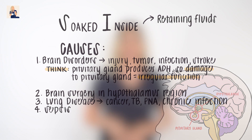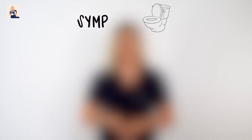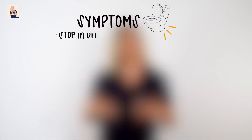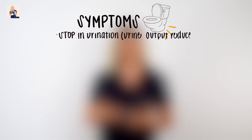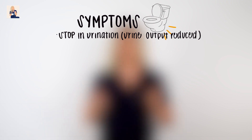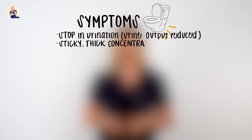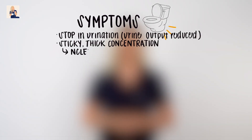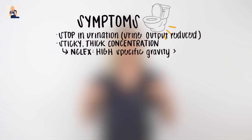Symptoms of SIADH all revolve around urination. If the body is holding in water, urine output will be reduced, so we see a decrease in urination. If we aren't peeing as much, we see sticky, thick urine concentration. Think about when you drink a ton of water — your pee is clear. Well, if you're not peeing it out, your pee is yellow, sticky, and thick. An NCLEX tip: this is what we call high urine specific gravity — it is highly concentrated, greater than 1.030.